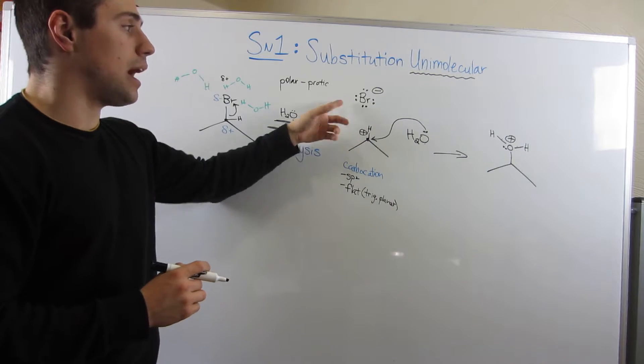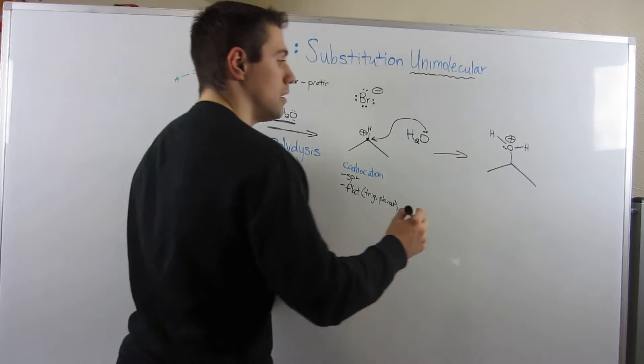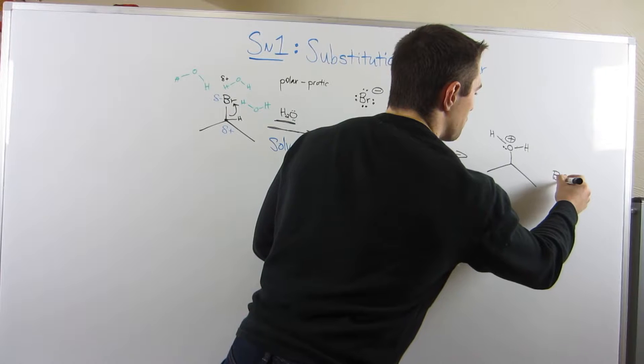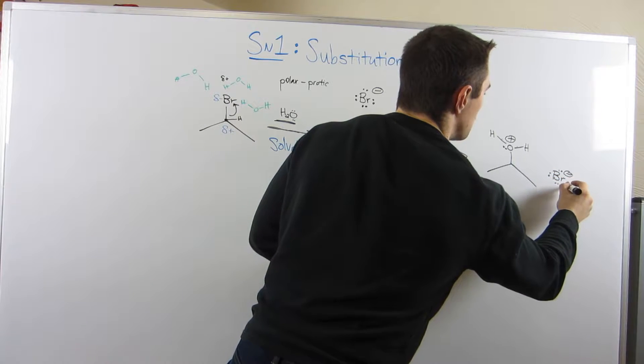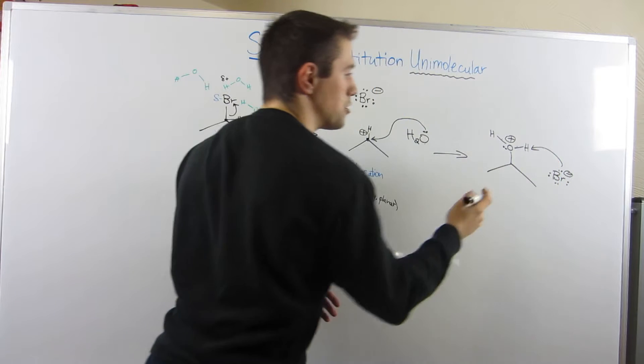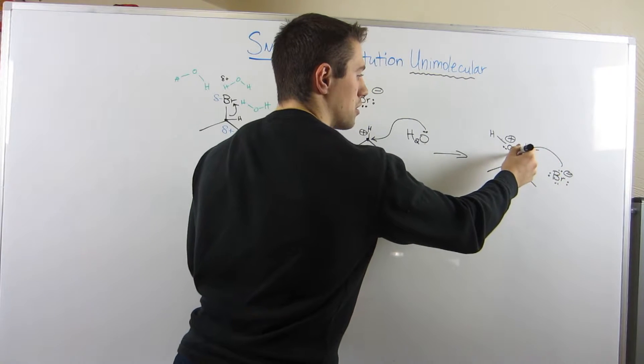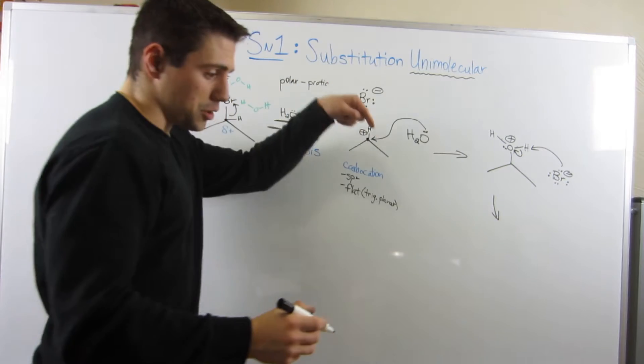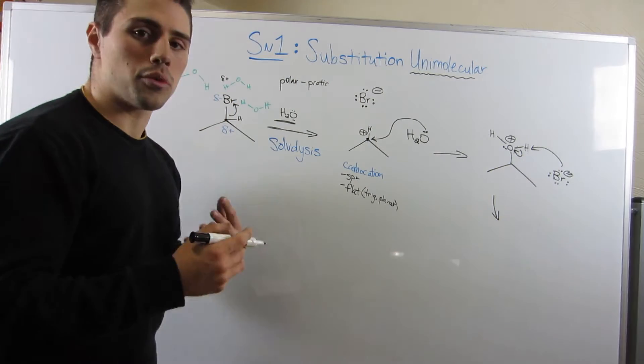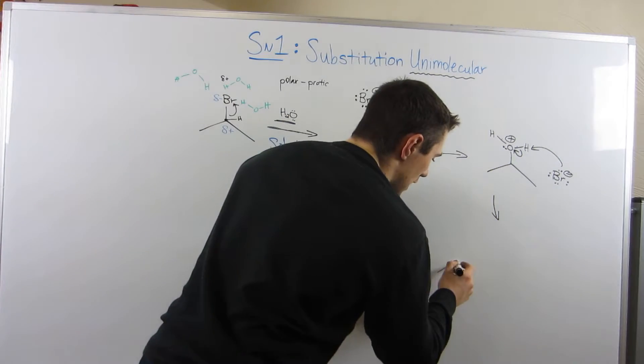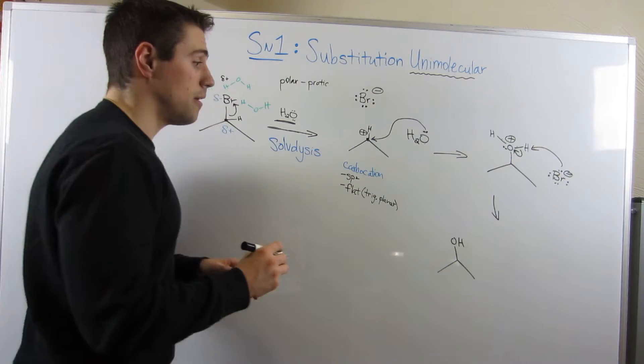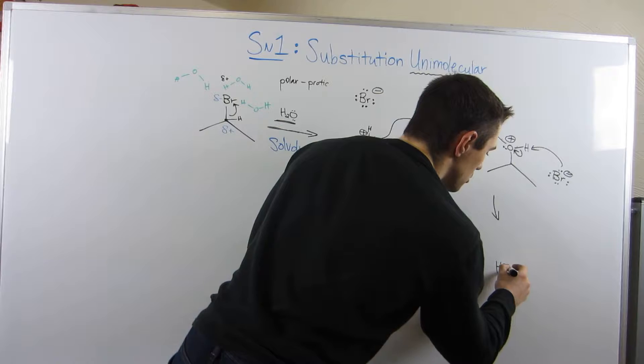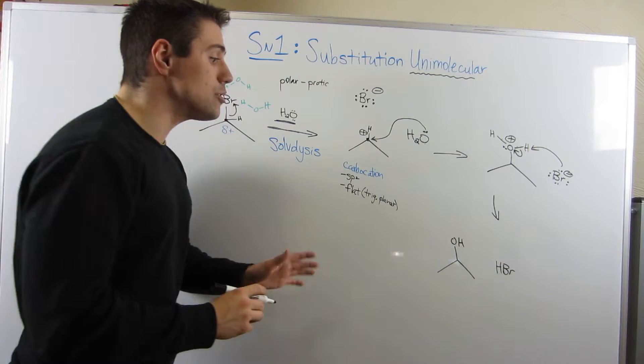So actually, this Br minus is going to come back and help us, because he's going to grab a hydrogen off of this oxygen. I'm going to grab the H plus, I'm going to dump these electrons on the oxygen. And if I draw my arrow down, here's kind of what we're left with. We are now left with isopropyl alcohol, and HBr. But don't worry too much about the HBr. We're not really interested in that.